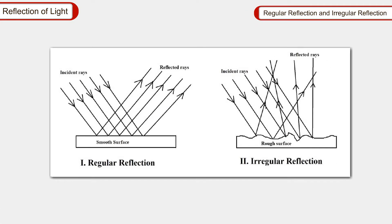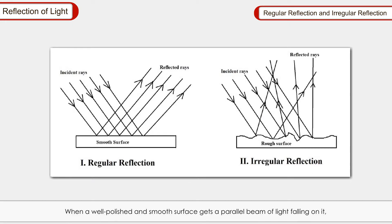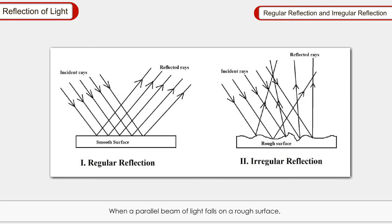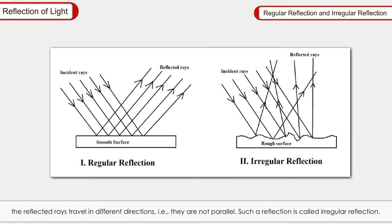Regular reflection and irregular reflection: When a well-polished and smooth surface gets a parallel beam of light falling on it, the reflected rays are also parallel. This is called regular reflection. When a parallel beam of light falls on a rough surface, the reflected rays travel in different directions — that is, they are not parallel. Such a reflection is called irregular reflection.